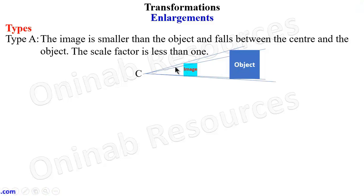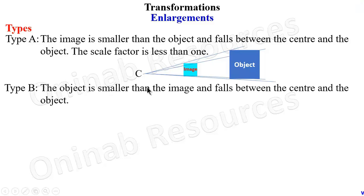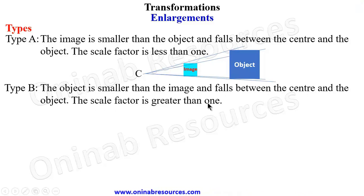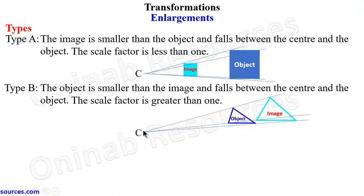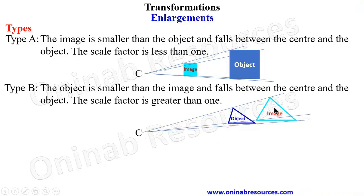For Type B, the object is smaller than the image and falls between the center and the image. The scale factor is greater than one. Looking at the diagram, this is the object which is smaller than the image — you can see the object falls between the center and the image.